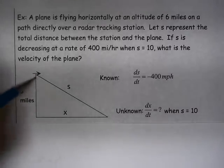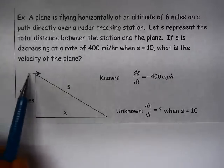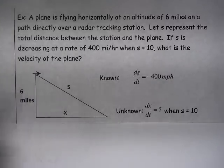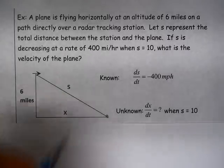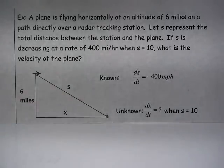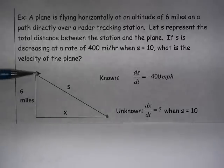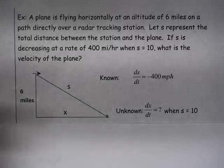So our diagram might look like this. We have a plane flying at an altitude of 6 miles and it is flying in a horizontal direction. The radar tracking station is at that lower right corner there. So it's flying overhead past the radar tracking station.